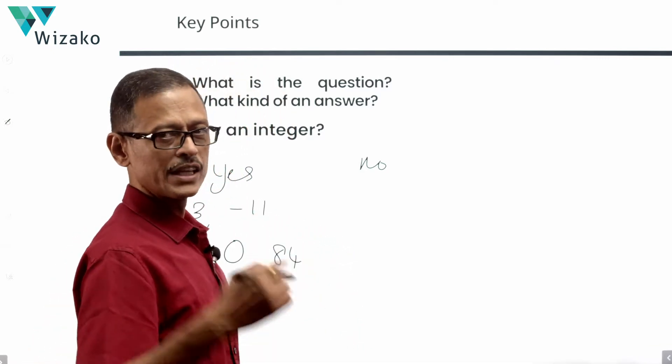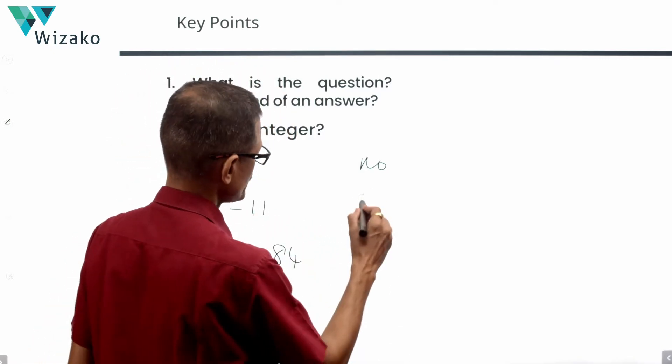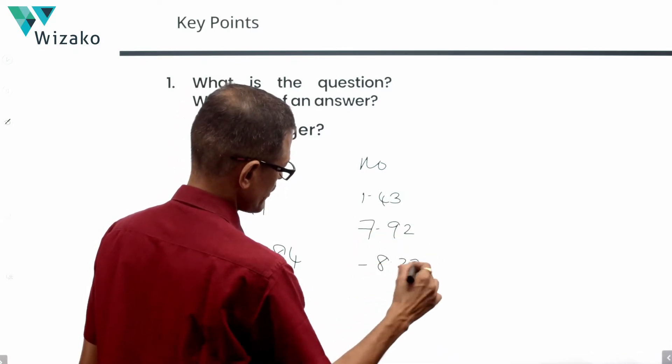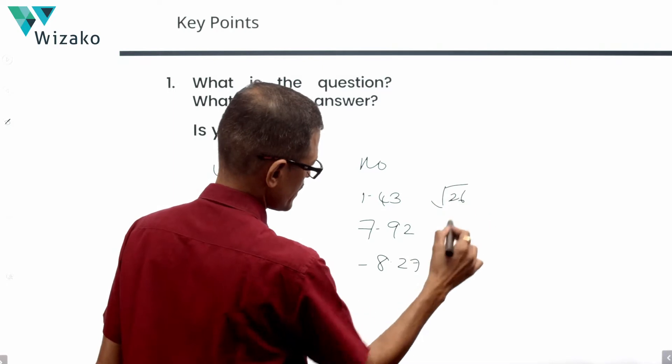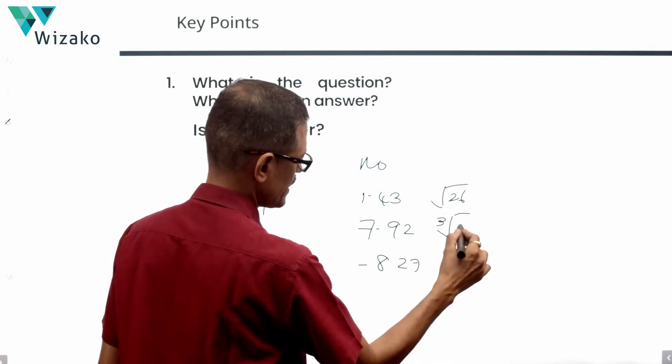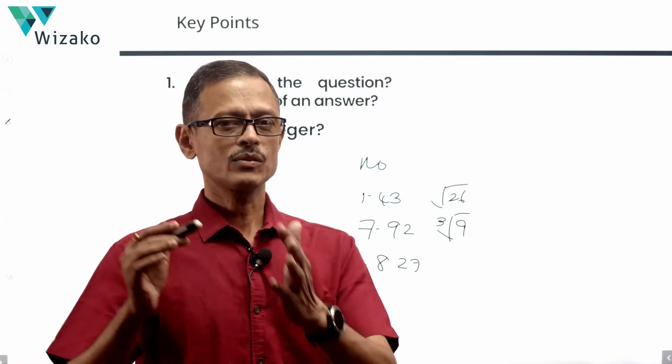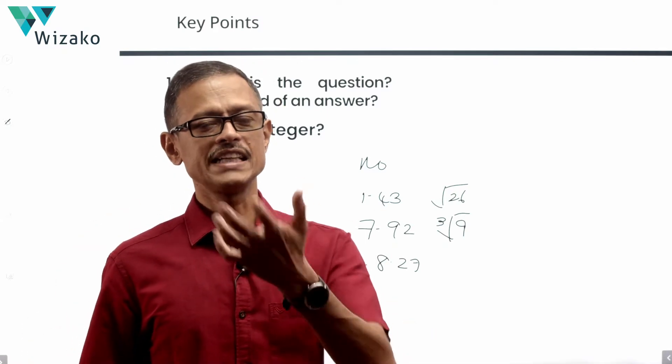If y ended up being, if you know for sure y is a number of this kind: 1.43, 7.92, minus 8.27, square root of 26, cube root of 9, all of these are non-integers. So you know what's an integer, what's a non-integer, when the answer is yes, when the answer is no.